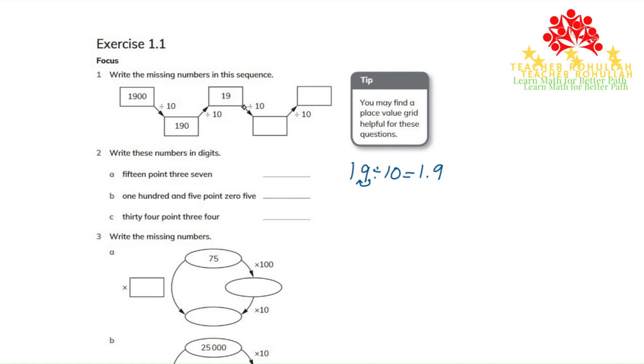When 19 is divided by 10, the answer is 1.9. In 1.9 divided by 10, again, the decimal point moves one place to the left. 1.9 divided by 10 equals 0.19.